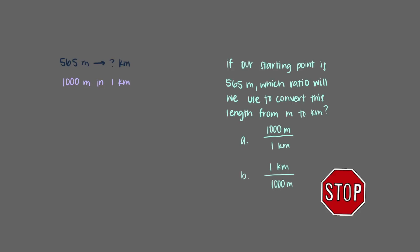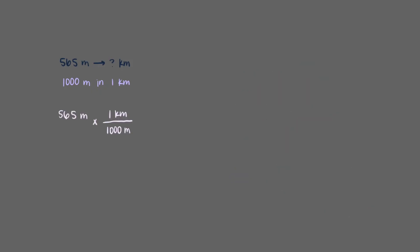Now let's try another one. Let's convert 565 meters into kilometers. There are 1,000 meters in 1 kilometer. If our starting point is 565 meters, which ratio will we use to convert this length from meters into kilometers? That's right, we'll use this ratio. It allows us to cancel out the meter units and leaves us with kilometers, which are the units we wanted to end up with. Now that we can multiply everything out, we see that 565 meters is equal to 0.565 kilometers.